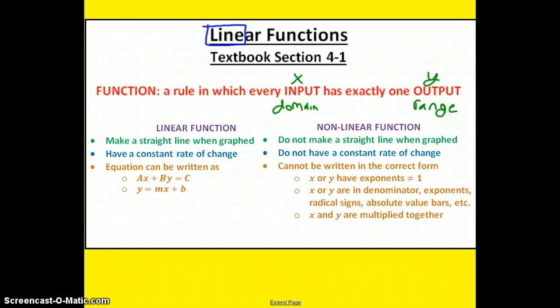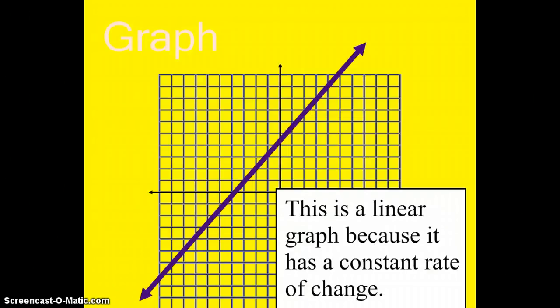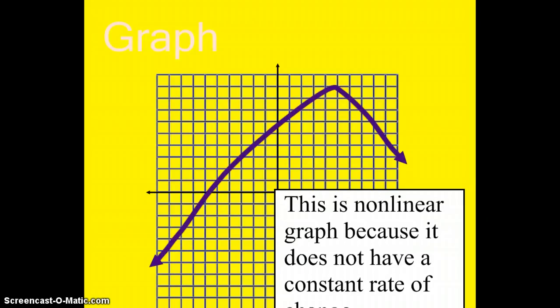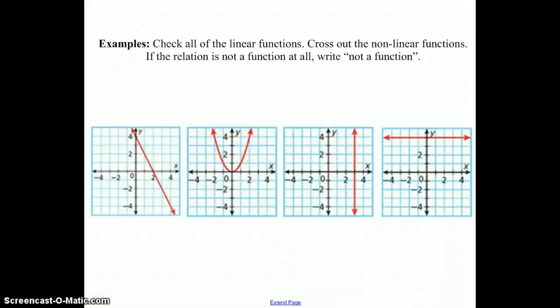So this graph here, that would be linear. This graph here is not a straight line. Remember, a line in math, it has to be straight. If I say line, just assume it's straight. So this would be non-linear. Okay? Pause the video, try these three on your own. First of all, decide if they're all functions.